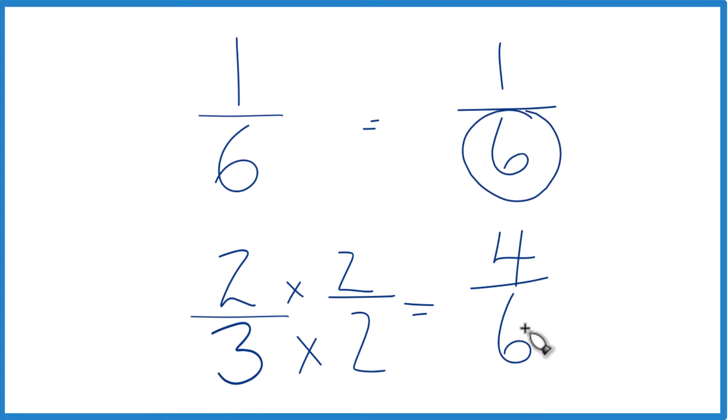But now, with the same denominator, we just compare the numerators. 4 is greater than 1, so 4/6 is greater than 1/6. Remember these are equivalent fractions, so 2/3 is greater than 1/6 as well.